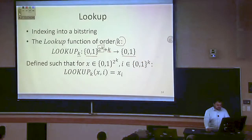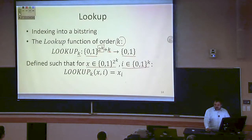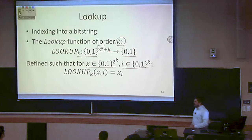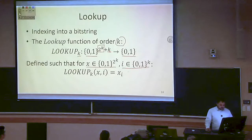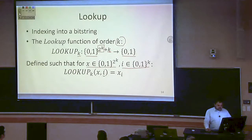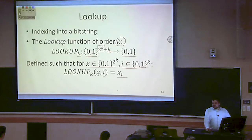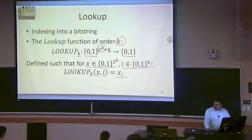So the idea is: if I give you bit string x that's 2 to the k bits long, and I give you bit string i that's k bits long, if I think of i as a natural number between 0 and 2 to the k minus 1, I want to return the bit x sub i — the i-th bit of x.